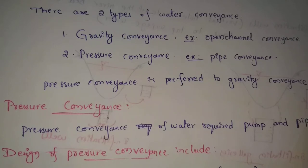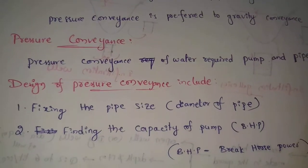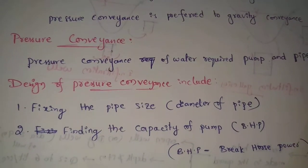Next, design of pressure conveyance includes fixing the pipe size, which is the diameter of the pipe.